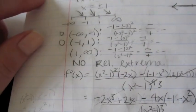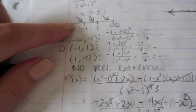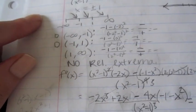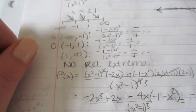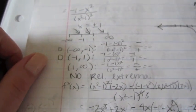Since the function is decreasing everywhere (tested with x = −2 in the first interval, x = 0 in the middle, and x = 2 in the last), there are no relative extrema. So there are no increasing intervals either — the function is strictly decreasing on each piece of its domain.